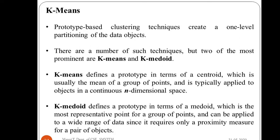When we illustrate, we use two-dimensional space, but you can extend it to n-dimensional space as well. K-medoid defines a prototype in terms of a medoid, which is the most representative point for a group of points, and can be applied to a wide range of data since it requires only a proximity measure for a pair of objects.